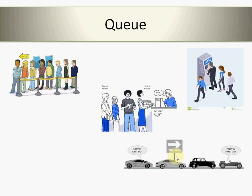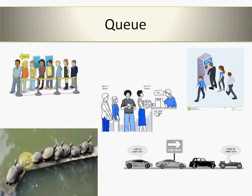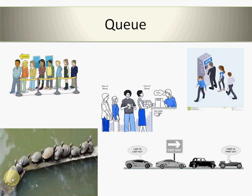Another example is a one-way road where there is a queue of cars — the first car exits the road first and the last car is at the rear of the queue. One more example shows tortoises in a queue on a narrow track, walking one by one. The first tortoise gets service first and the last one gets service last. These general examples illustrate how the concept of a queue is used in different real-world applications.